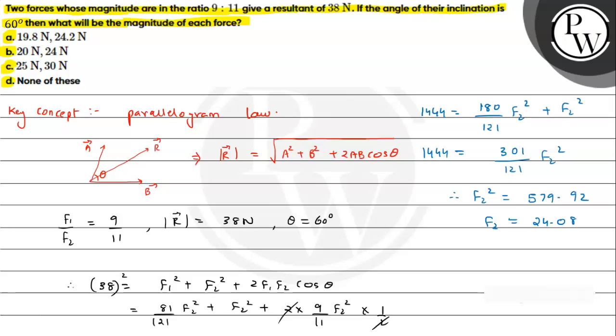We can see that option A or B, both are closest. So we have to see further options. We have to calculate f1 as well. Therefore f1 will be 9 by 11 into f2.